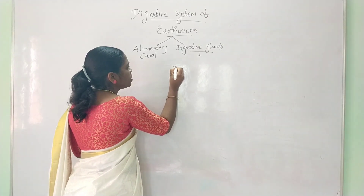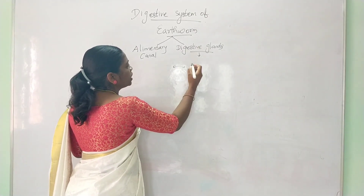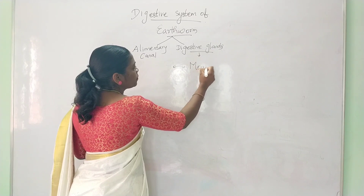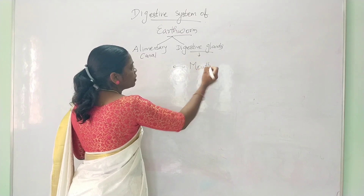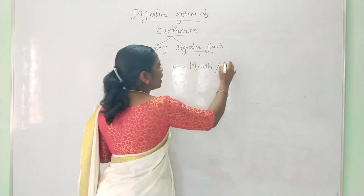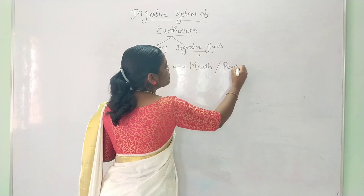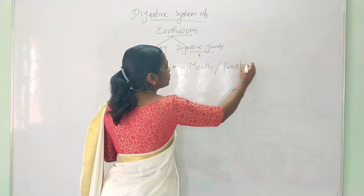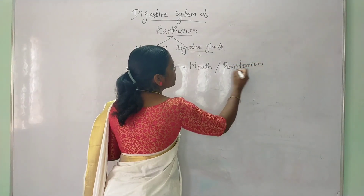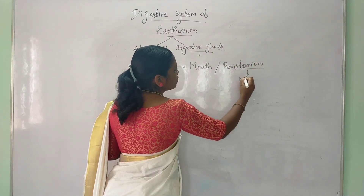This is a small opening — this is the mouth. The segment containing the mouth is called the Peristomium. Peristomium — 'stomium' means mouth.